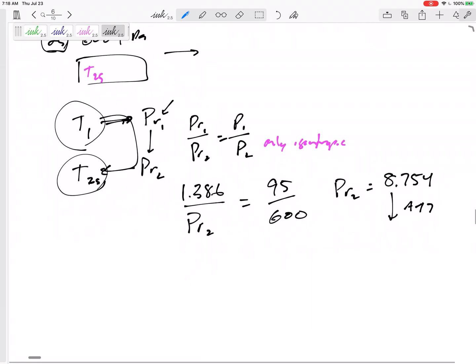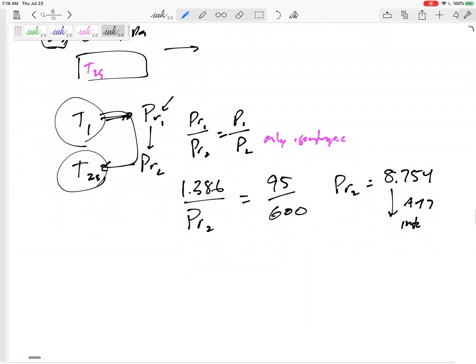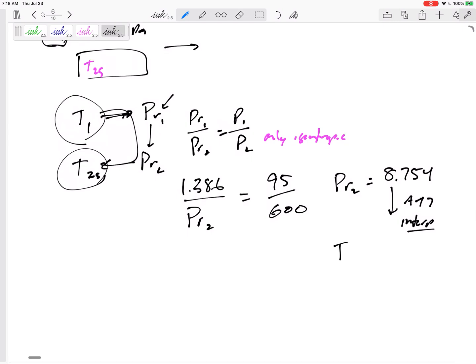Take that to table A17. Probably interpolate, all right? Interpolate. Here is where I will want you to interpolate. And I'd get a T2S, 505.5 Kelvin. Maybe keep that interpolation open and interpolate also to get H2S, 508.72 kilojoules per kilogram.